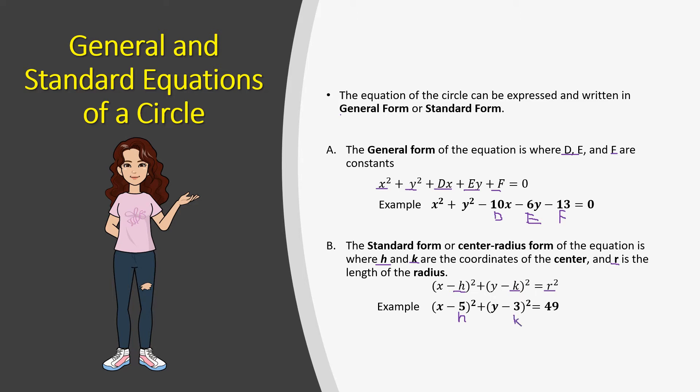So 5 and 3 are the coordinates of the center. The radius r is found from 49, but since it is squared, our radius is only r. So the square root of 49 is 7, and r equals 7.